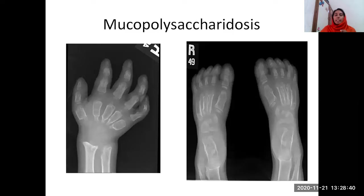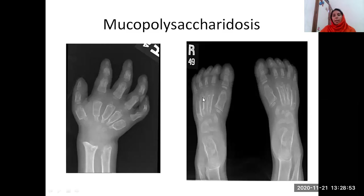This is another x-ray about mucopolysaccharidosis. Here, the clinging point is this bullet-shaped metacarpals and also bullet-shaped metatarsals, which is seen in the lower limb x-rays. So both upper limb and lower limb have bullet-shaped metacarpals and metatarsals respectively.